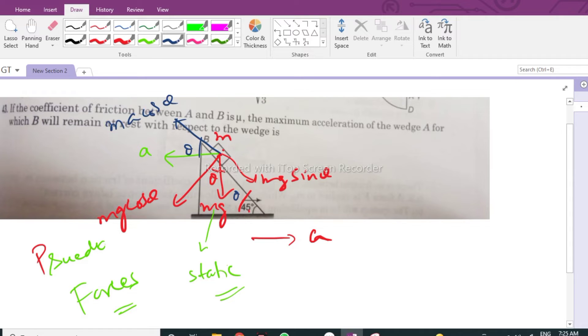And you will have one more component here, ma sine theta. Here theta is 45 degrees, but I'm just taking the general notation. So the block will have a normal reaction like this.